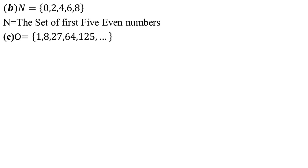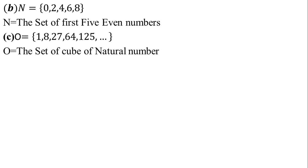In part C, O = {1, 8, 27, 64, 125}. These numbers are cubes of numbers. So O is the set of cubes of natural numbers. What is a cube? It means taking the power of 3. So 1³ = 1, 2³ = 8, 3³ = 27, 4³ = 64, 5³ = 125. The answer for part C: O is the set of cubes of natural numbers.